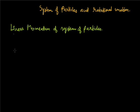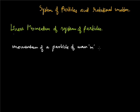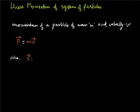The momentum of a particle having mass m and velocity v is given by p equals to mv. We also know from Newton's second law of motion that force equals to the change in momentum with respect to time, which means F equals to m dv/dt, where F is the force on that mass particle due to which its velocity is changing and it is being accelerated.